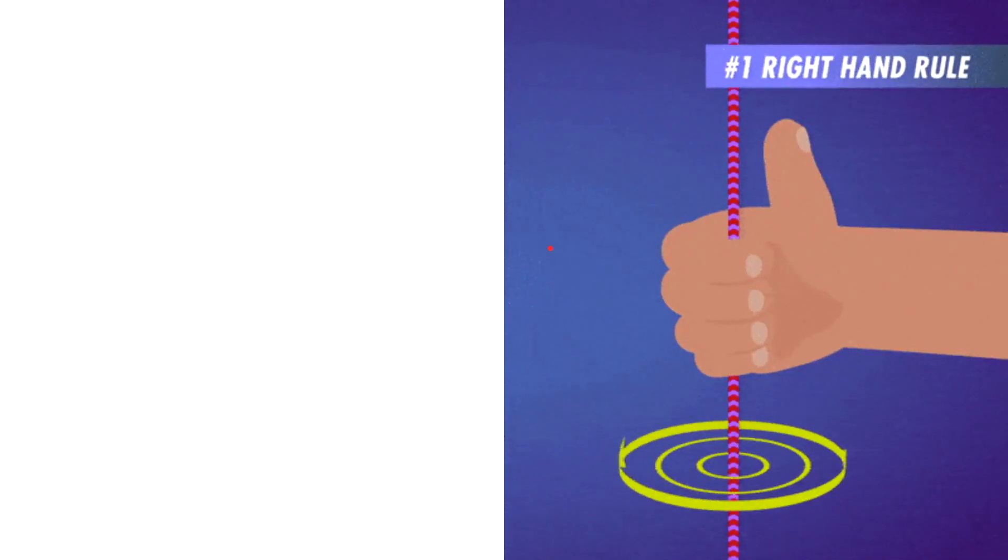Now, there is an easy way to remember how the direction of electric current and the direction of the magnetic field it produces relate to each other. It's called the first right hand rule, because there are actually three right hand rules.